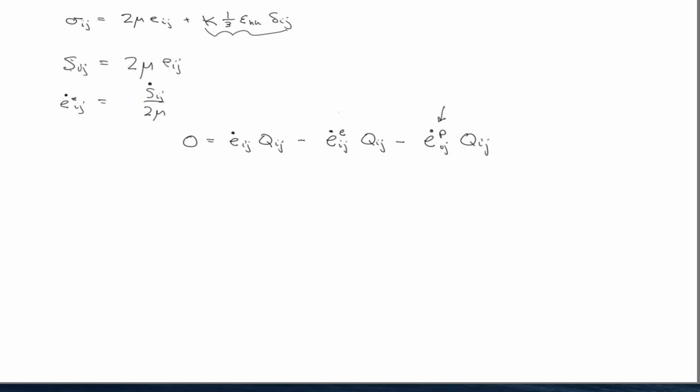All right. So, associated flow rule here, Hooke's Law here, and I have. All right. Well, what's this? It's equal to one. So, we have that.